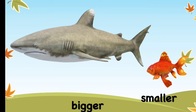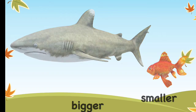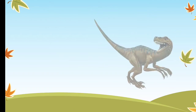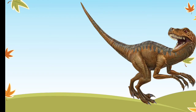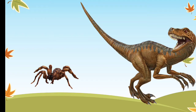Now if you look at so many things around your house, you can see things that are bigger than others and some things that are smaller than others. Now look at this dinosaur, and here comes a tarantula.